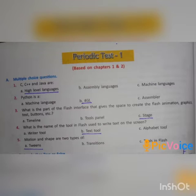Fourth one: What is the name of the tool in Flash used to write text on the screen? Option A: writer tool, option B: text tool, option C: alphabet tool. Answer: option B, text tool. Fifth one: Motion and shape are two types of — option A: tweens, option B: transitions, option C: tools in Flash. Answer: option A, tweens.